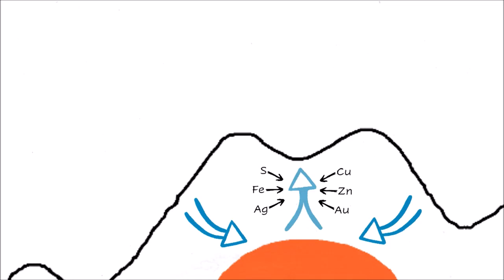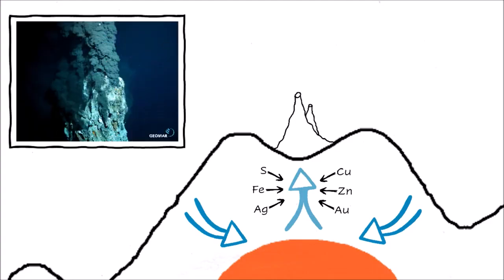As soon as it reaches the cold seawater, the minerals precipitate and form small particles. These stack up along the sides and slowly chimneys are formed. We call them hydrothermal vents.